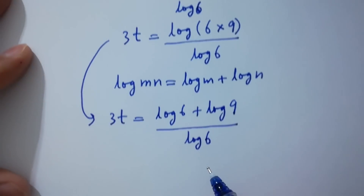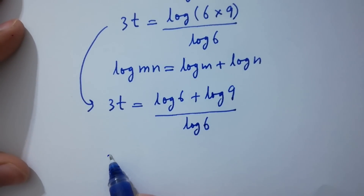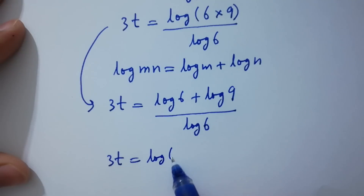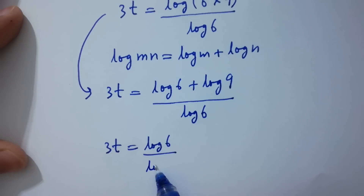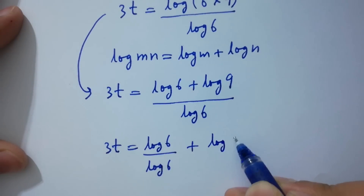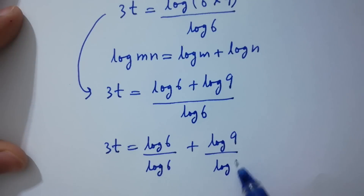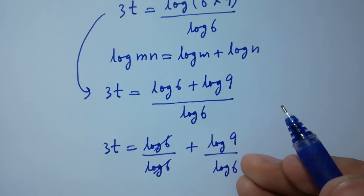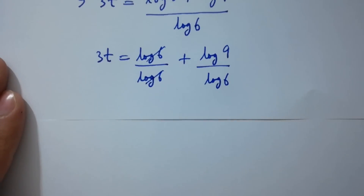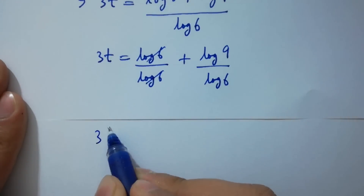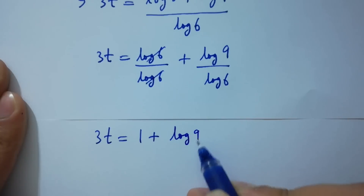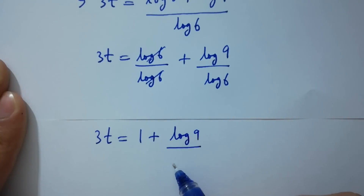Since log(mn) equals log m plus log n, we separate the fraction: 3t equals log 6 over log 6 plus log 9 over log 6. Log 6 over log 6 cancels to give 1, so 3t equals 1 plus log 9 over log 6.